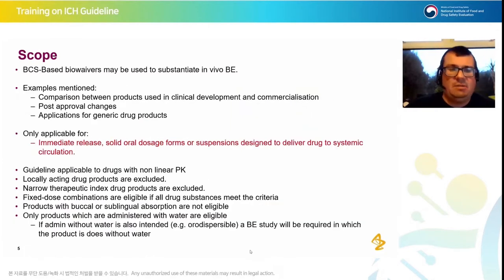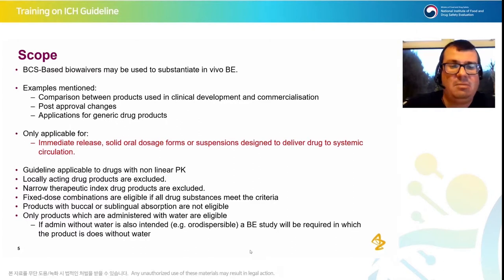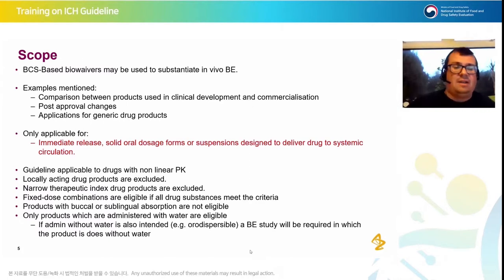The scope: it's used to substantiate in vivo bioequivalence. Times it might be used include comparing products used in early clinical development to the final product to commercialise — that's the key consideration from an innovator's perspective. You can also conduct post-approval changes where you'd otherwise be asked to perform a bioequivalence study; you can probably substitute that with a BCS biowaiver. And obviously it's applicable for generic drug products, which is often one of the large focus areas.